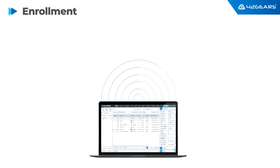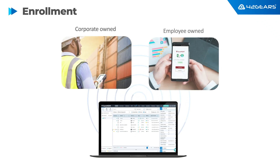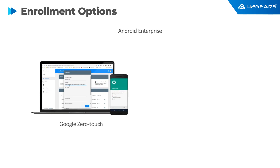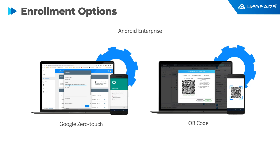Android lifecycle management consists of multiple stages. It starts with enrollment of your corporate or employee-owned devices into the MDM platform. Android Enterprise is the most common and recommended method of enrollment of Android devices, and this option is suitable for GMS-certified devices. For Android Enterprise, you can use either Google Zero Touch or QR Code-based enrollment.